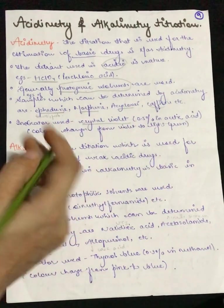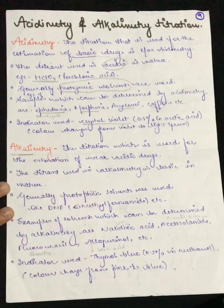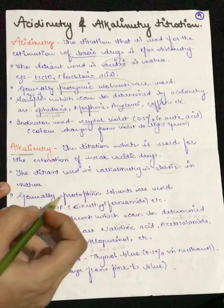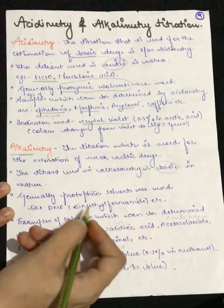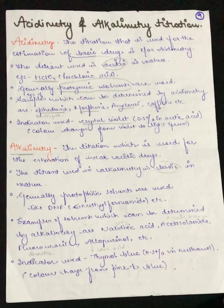In alkalimetry, we will identify and do quantitative analysis of some acid. The titrant used will be basic in nature. Generally, protogenic solvents are used like dimethyl formamide. Now, which drugs can we analyze?